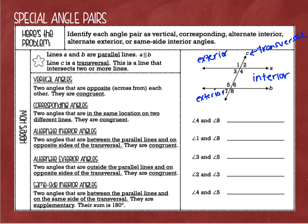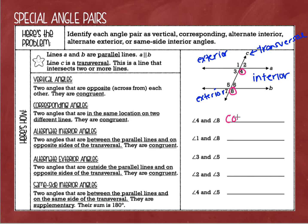We're going to go through these examples one at a time. So angle 4 and angle 8 — if I were to take parallel line A and slide it down on top of parallel line B, 4 and 8 would be right on top of each other. 2 and 6 would be on top of each other, 1 and 5, and 3 and 7. These are called corresponding angles.